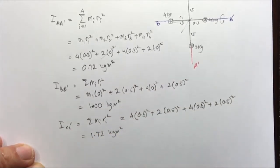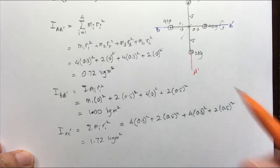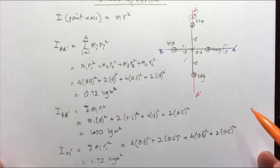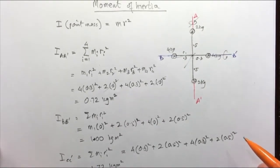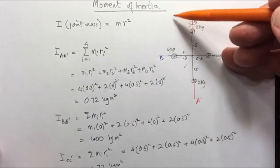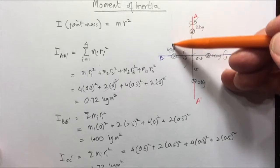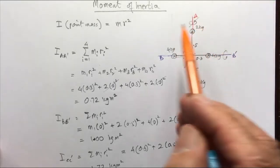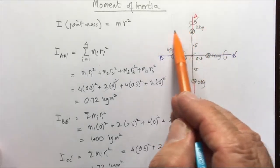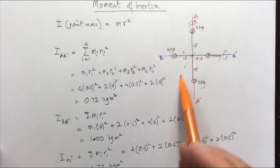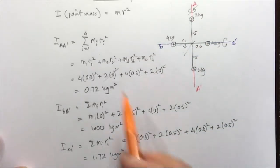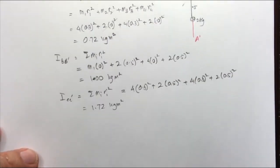So it depends on where you place your axis. In the homework there's a question where the axis is kept somewhere else, in which case the distances are measured from that axis. R is always measured from the axis.